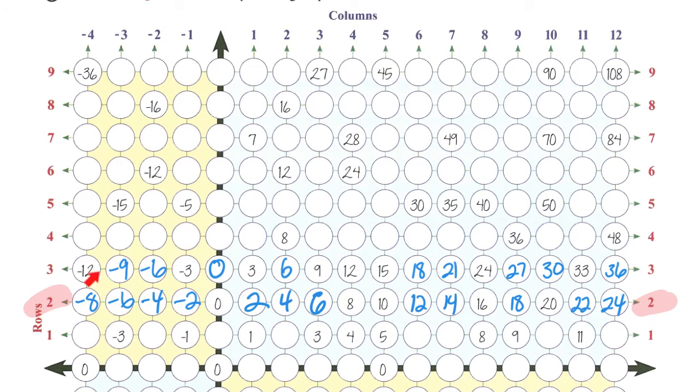Here's row three all filled in, and again we're noticing a positive number times a negative number gets us a negative number.